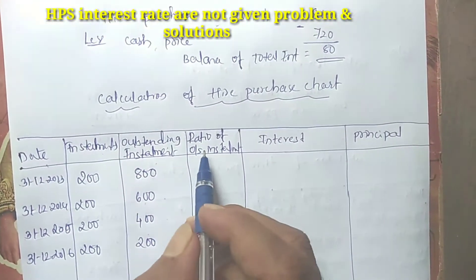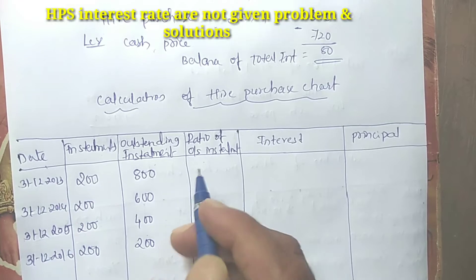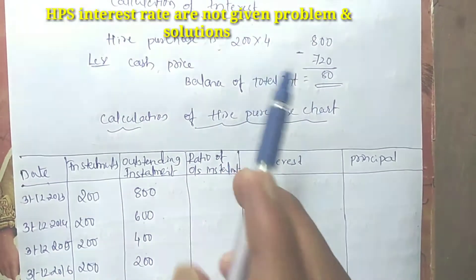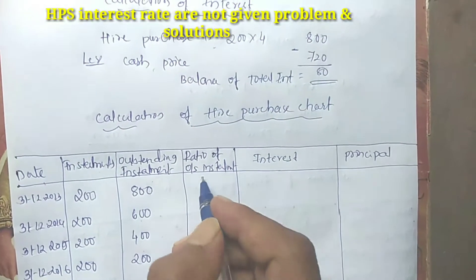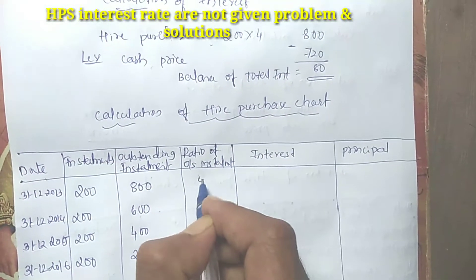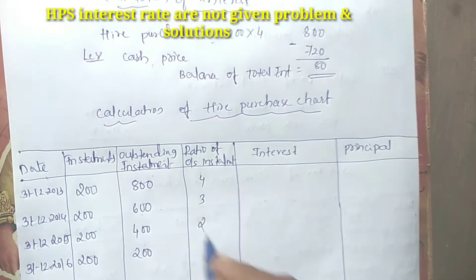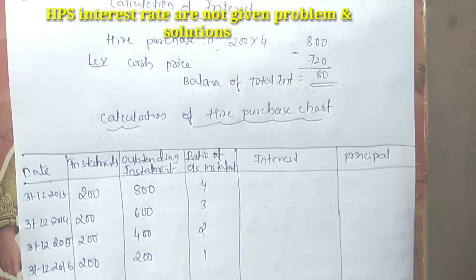The ratio of outstanding installments: total digits = 4 + 3 + 2 + 1 = 10. The ratios are 4, 3, 2, 1 for each year respectively.